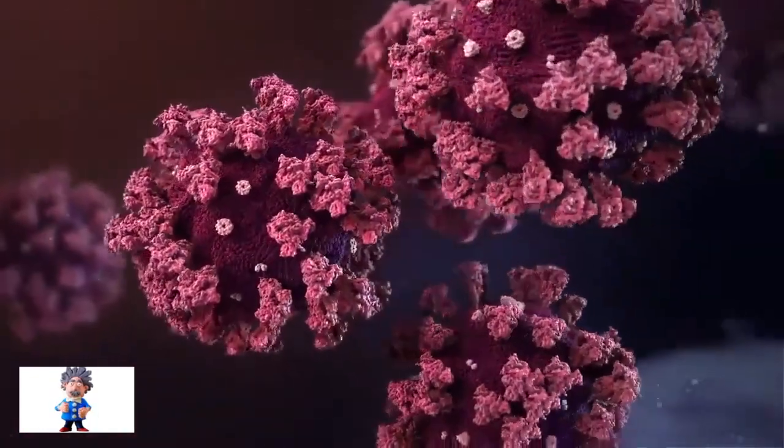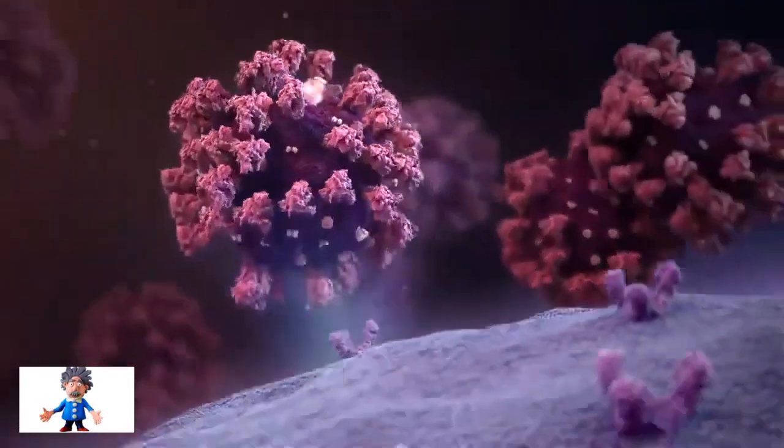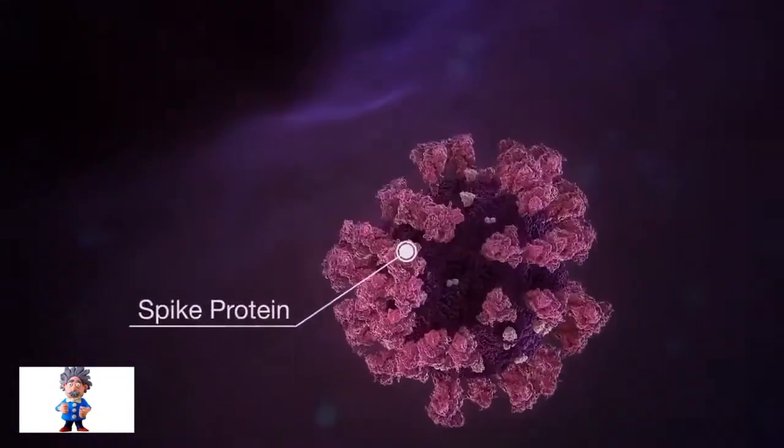Omicron has a total of about 30 mutations on its spike protein, which is the structure the coronavirus uses to gain entry into human cells.